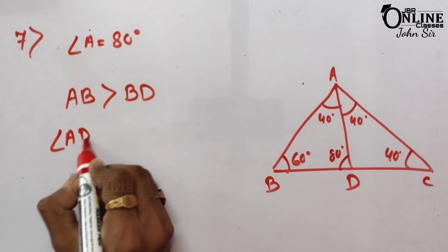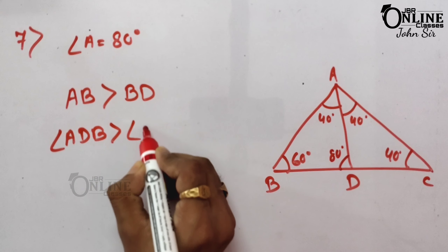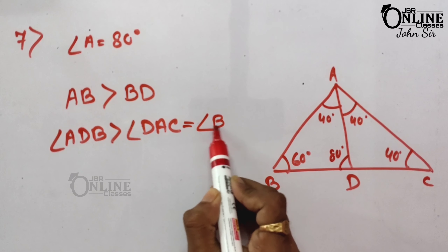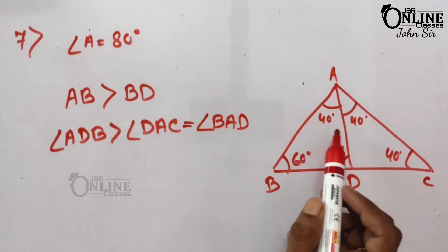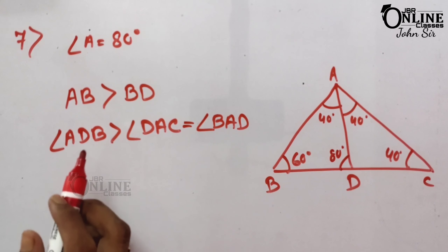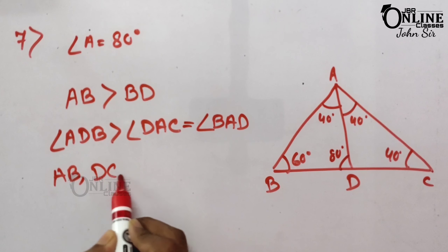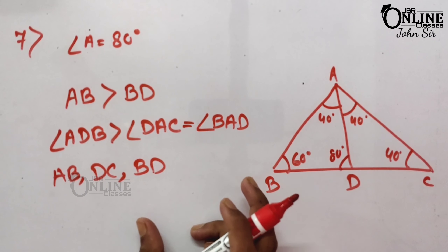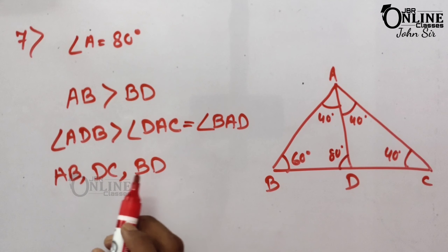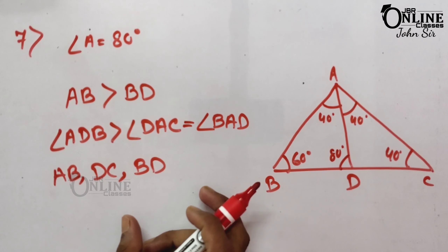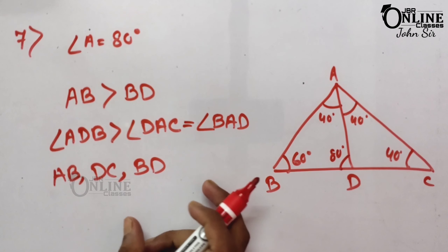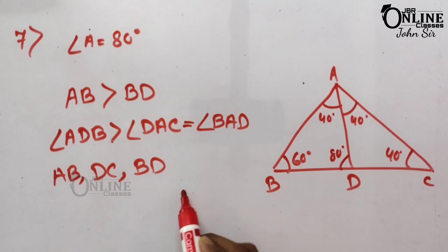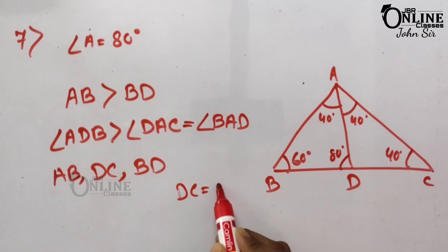Since 80° is greater than 40°, we can write: angle ADB > angle DAC (which is 40°), and angle DAC equals angle BAD (also 40°). Hence AB, DC, and BD are in descending order of their length. We can also note that DC = BD in this arrangement.